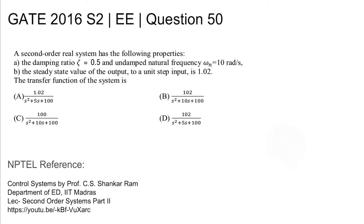This is GATE 2016 Set 2 Electrical Engineering question number 50. A second order real system has the following properties: damping ratio is 0.5, undamped natural frequency ωₙ is 10 radians per second, and the steady state output for a unit step input is 1.02. The transfer function of the system is being asked for.